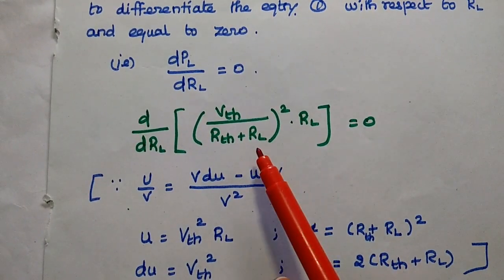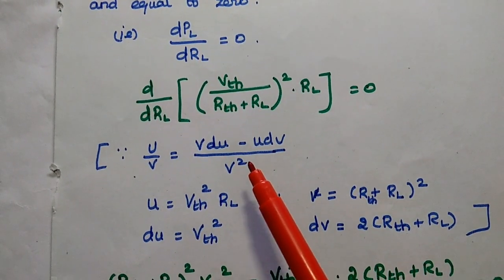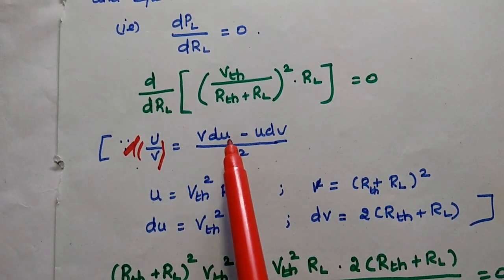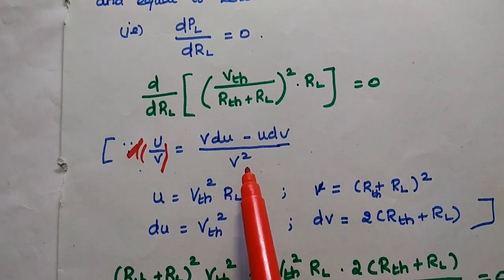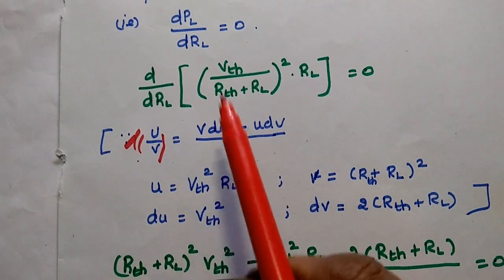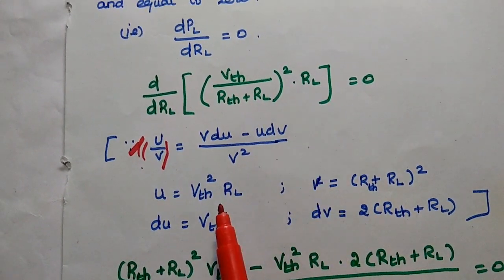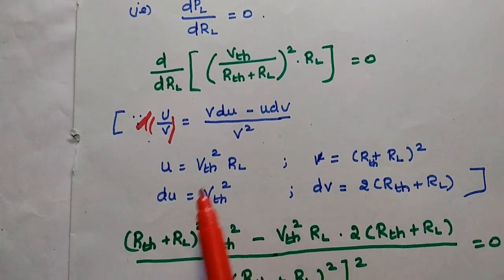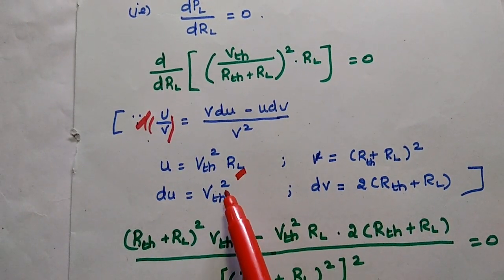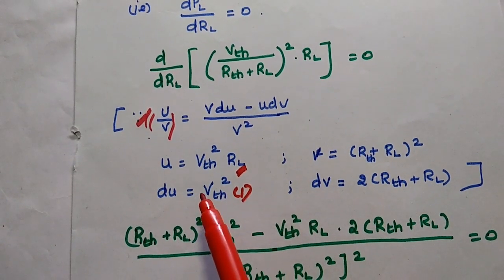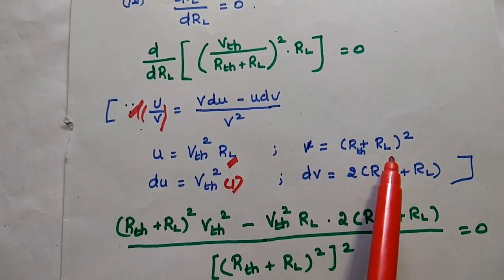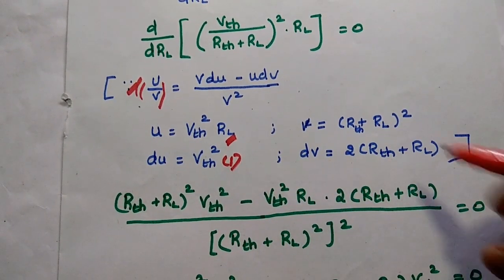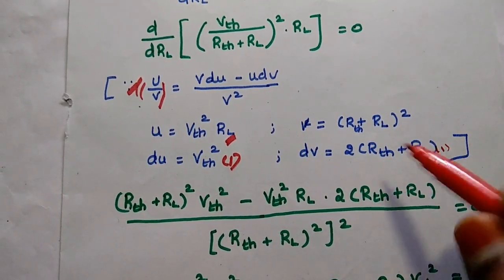Since RL appears in two places, the differentiation is a little bit complicated. For that we use the formula for d(U/V) = (V·dU − U·dV) / V². Here U is the numerator value VTH²·RL, and V is the denominator value (RTH + RL)². Then dU, differentiating with respect to RL, gives VTH². And dV equals 2(RTH + RL), since differentiating RL gives 1.